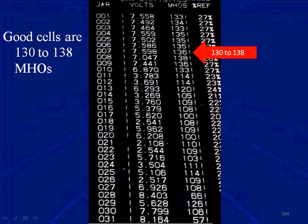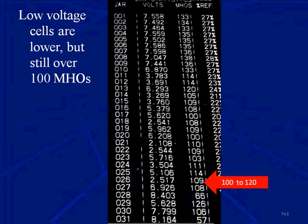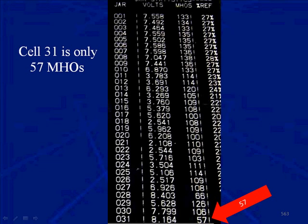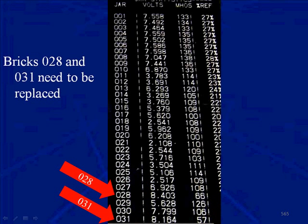Now let's look at the conductance column. This test unit from Medtronics calls it MHOS. Good, strong cells are 130 to 138 — they fail if they go under 100. We see readings of 130 to 138 doing well, then dropping lower but still good. Then we have a 66 and a 57, both under 100. These correspond to the same two bricks that had high voltage. Bricks 28 and 31 need to be replaced, as those are the two bad units.